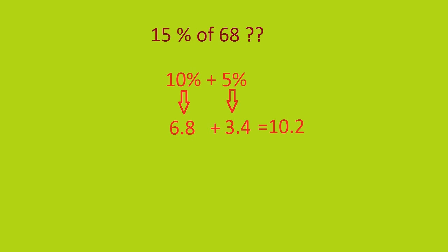Then you just need to write them and add them up so that you will get the answer. Here, 10% of 68 is 6.8 and 5% of 68 will be half of that because half of 10% is 5%. So it is basically 3.4. Now we add them up and get the answer as 10.2.